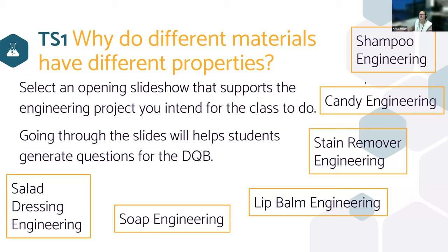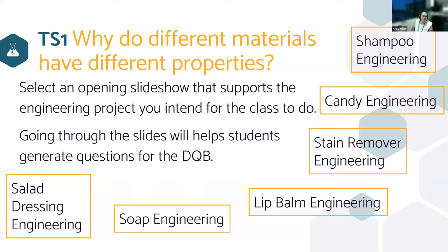Shampoo engineering — I went to a major grocery store and got five or six recognizable shampoo brands from commercials. Kids really resonated with exploring and comparing those. So when choosing your engineering project, think about your time, your resources, your materials, and read through the things to watch out for — what might kids deviate on or not understand, what's in your bandwidth to support.